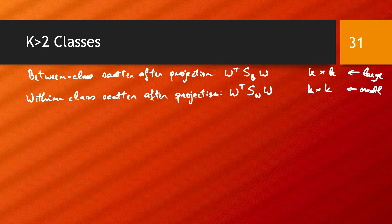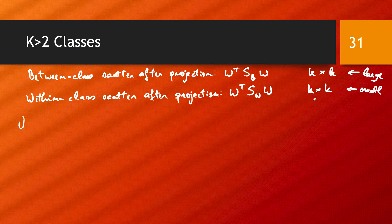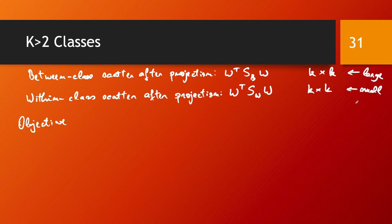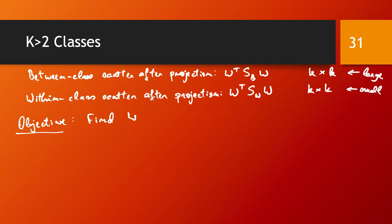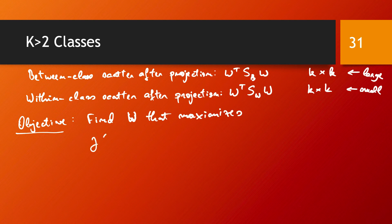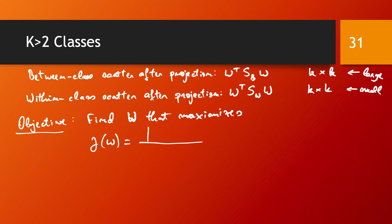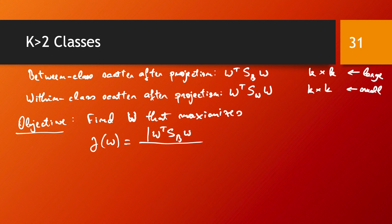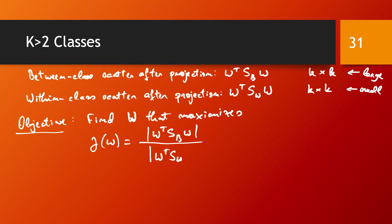And so our objective is going to be to find W that maximizes this J(W) defined in this case to be the determinant of W transposed S_B times W, over the determinant of W transposed S_W times W.